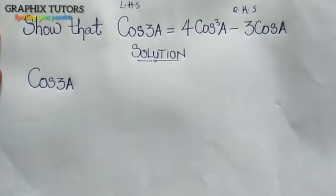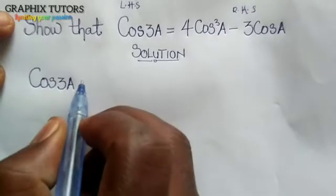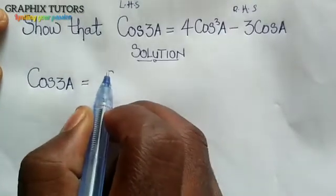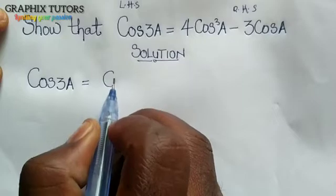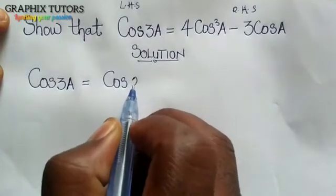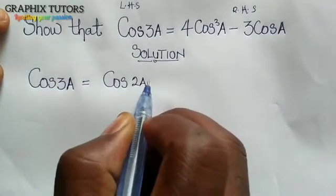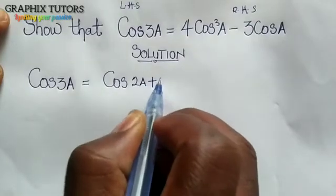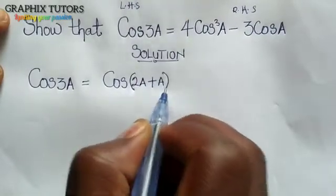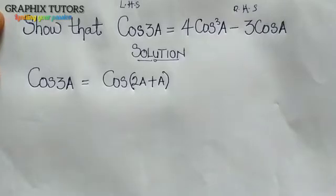We will call cos 3a a triple angle, and we can break it down. This can also be written as cos(2a + a), because 2a plus a is going to give you 3a.